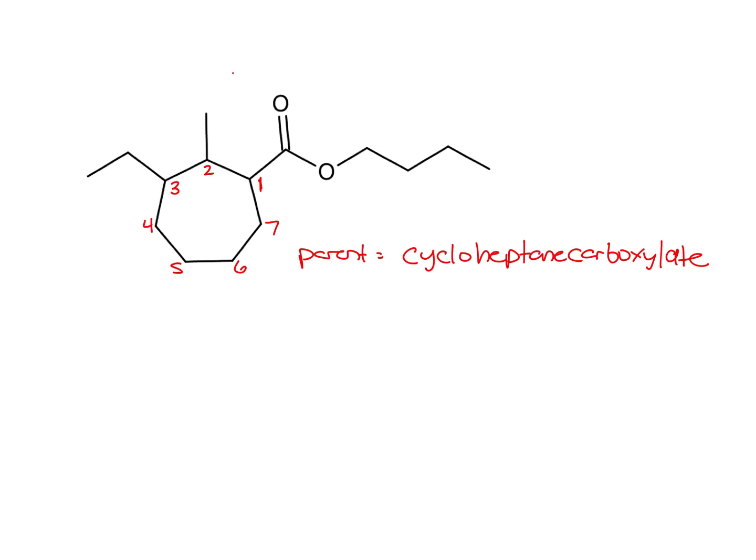Now we do have our R group on the ester to deal with. This is a 4-carbon chain. That's a butyl group. And then we also have substituents to deal with. We have on carbon-2, a methyl. And on carbon-3, an ethyl.